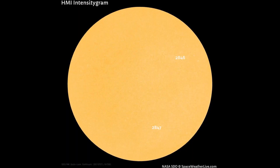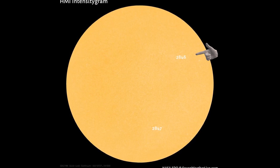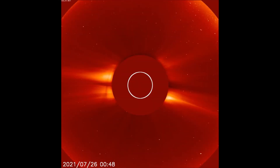Starting off today with the HMI intensitygram image, which shows the sunspot regions on the surface of the sun facing Earth. There was a B-class flare produced at the 2846 region today on the LASCO C2 filter.